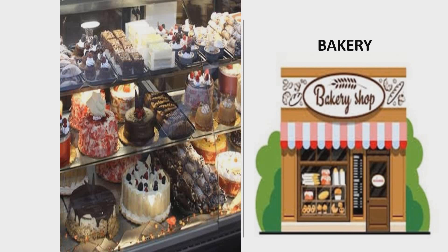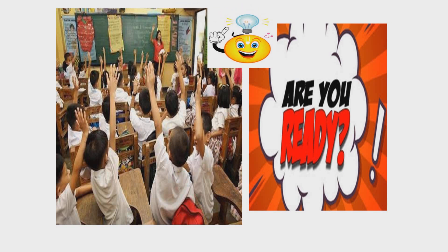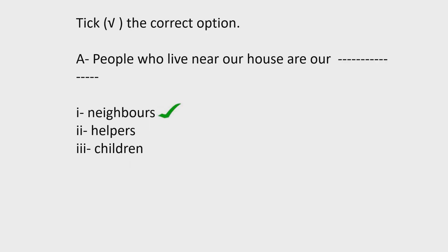Now it's time to see what you have learned. Are you ready? Okay, let's go. Take the correct option. Question one: people who live near our house are our blank — neighbors, helpers, or children? Yes, the answer is neighbors. Question two: the area around our house forms our blank — school, park, or neighborhood? Yes, neighborhood.